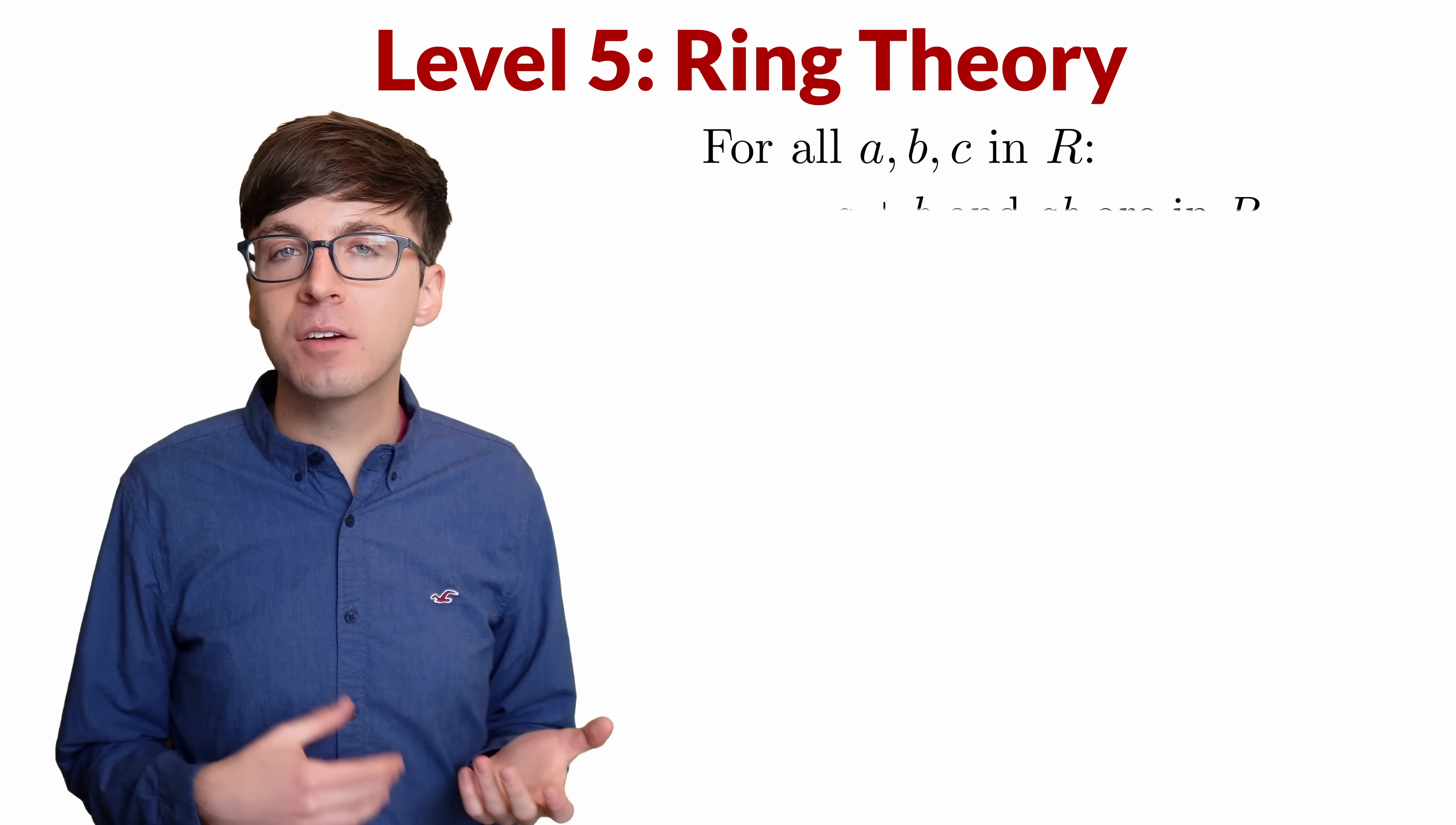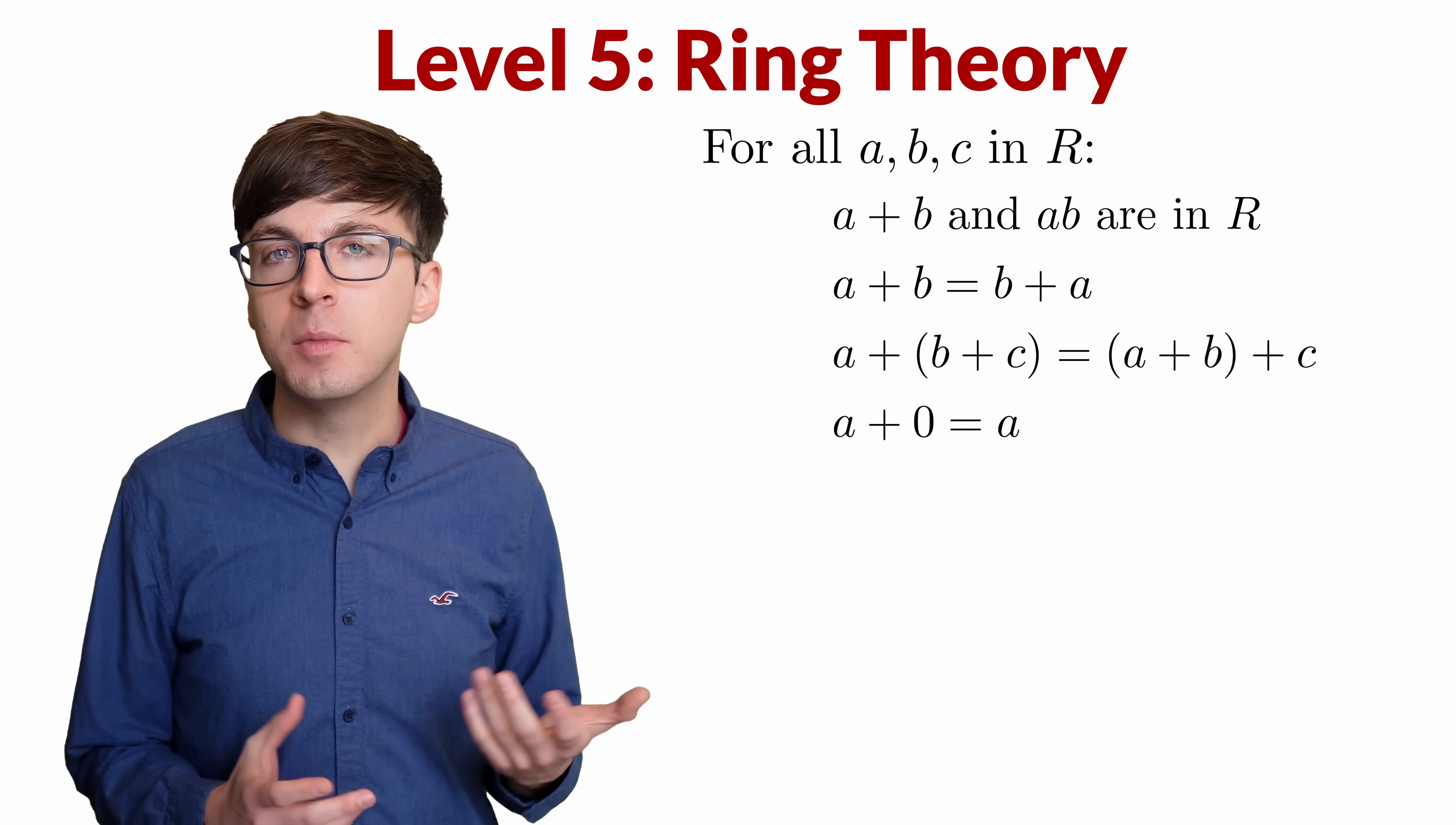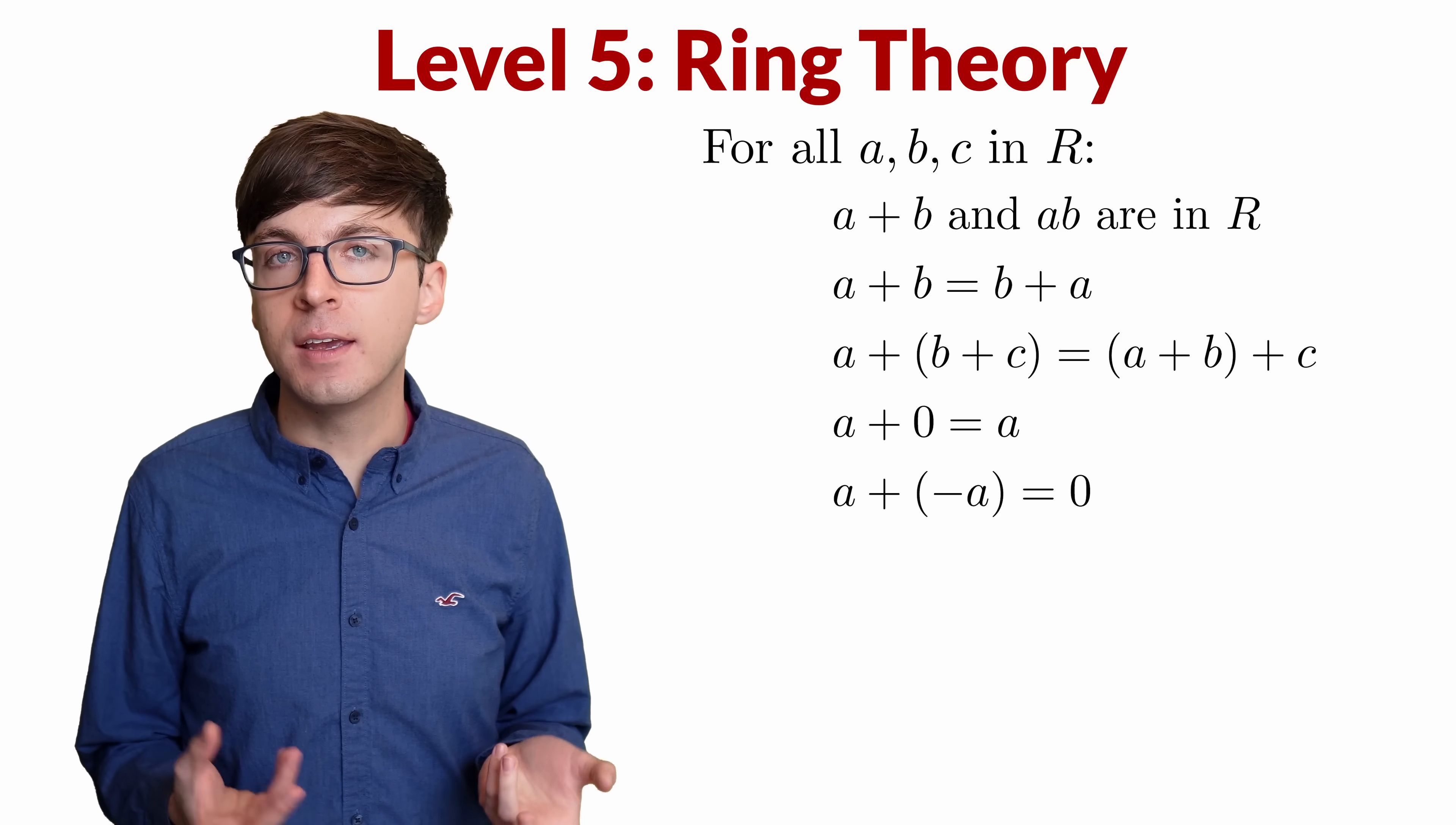First, if you add or multiply two elements in the ring, the result is still in the ring. Next, addition is commutative and associative, so we can add elements in any order we like. There is an additive identity, which we'll call 0. This means a plus 0 equals a for every a, or in other words, adding 0 does not change the value. Next, every element a has an additive inverse that we call negative a. This means that a plus negative a equals 0.